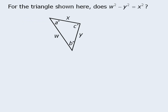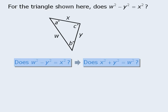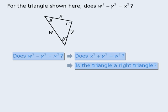In this question, we want to determine whether or not w squared minus y squared is equal to x squared. We could move the variables around to ask: does x squared plus y squared equal w squared? Now if x squared plus y squared were to equal w squared, then we would have a right triangle. So we could ask: is this a right triangle? Or we could ask: does angle C equal 90 degrees? There are several ways to rephrase the target question, and each new wording suggests another way in which the corresponding statements could be sufficient.